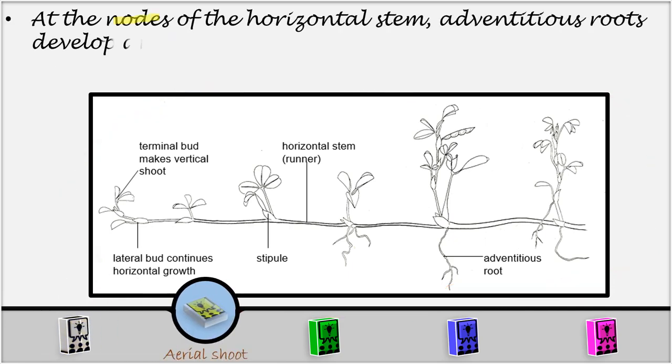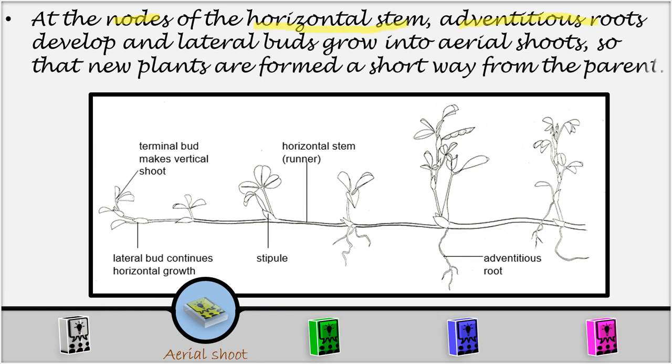At the nodes of the horizontal stem, adventitious roots develop, and lateral buds also grow into aerial shoots, so that new plants are formed a short way from the parent. So let us look here and see. When you look here, you are going to see that here we have a parent plant with adventitious roots. Now, here we have adventitious roots which are evolving here, and then the lateral buds develop and grow into the aerial shoot. Now, the new plant is going to grow short away from the parent.